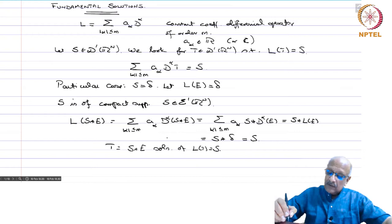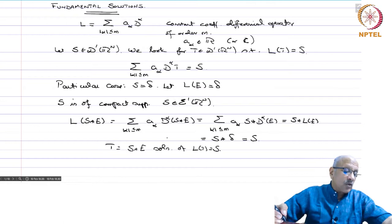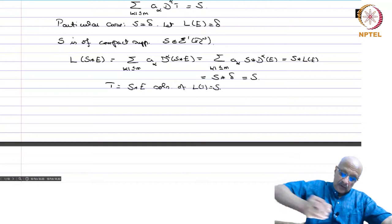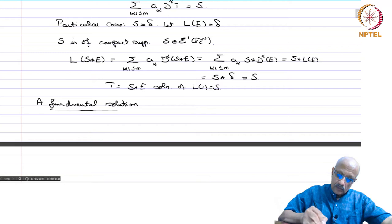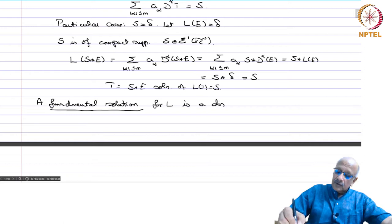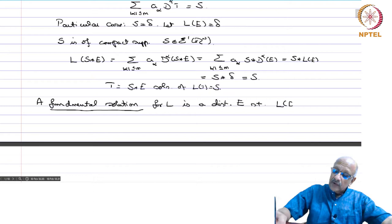Given any solution, from the fundamental solution you can predict the behavior of some of the solutions even though you may or may not be able to solve it explicitly. A fundamental solution for L is a distribution e such that L(e) = δ.